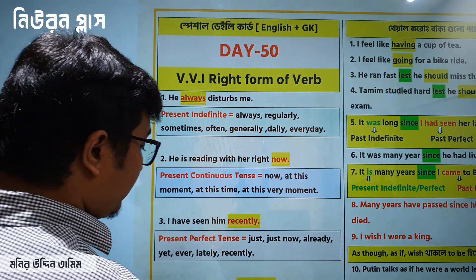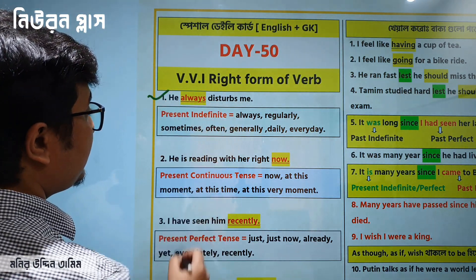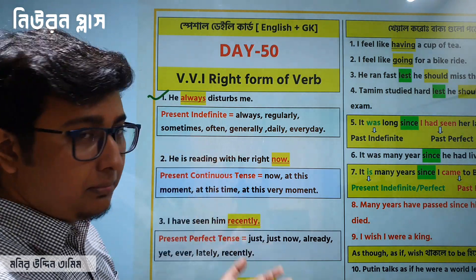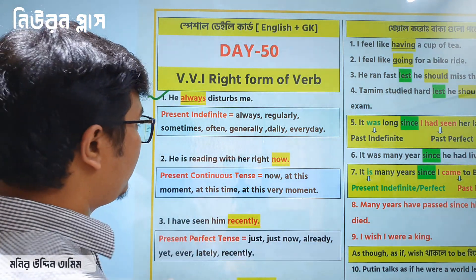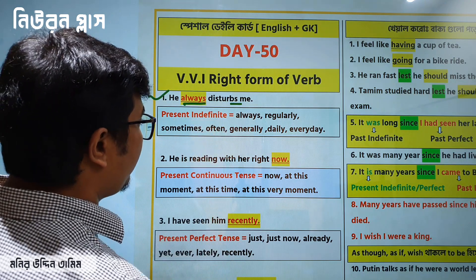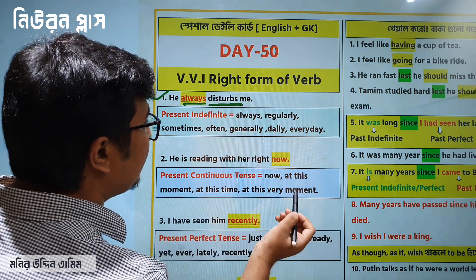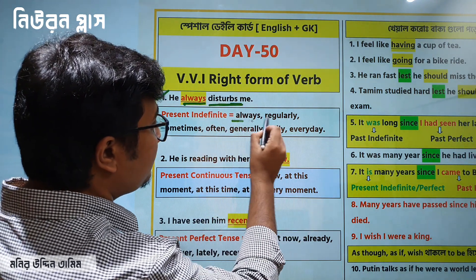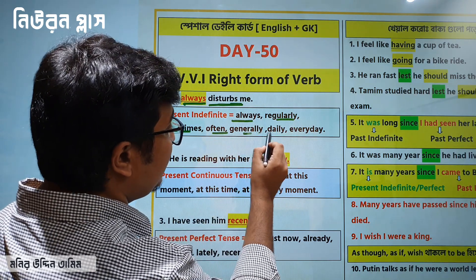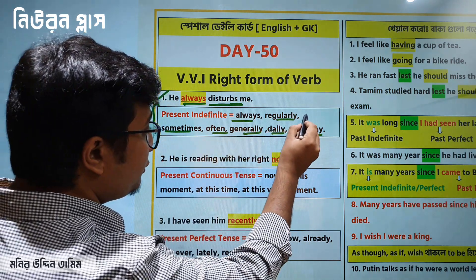How are you going to see these examples? He always disturbs me. He always disturbs me — this is the first individual tense. So what do we do? Always, regularly, sometimes, and generally, daily, every day — as always, while we are having the right of the action that we refer to.